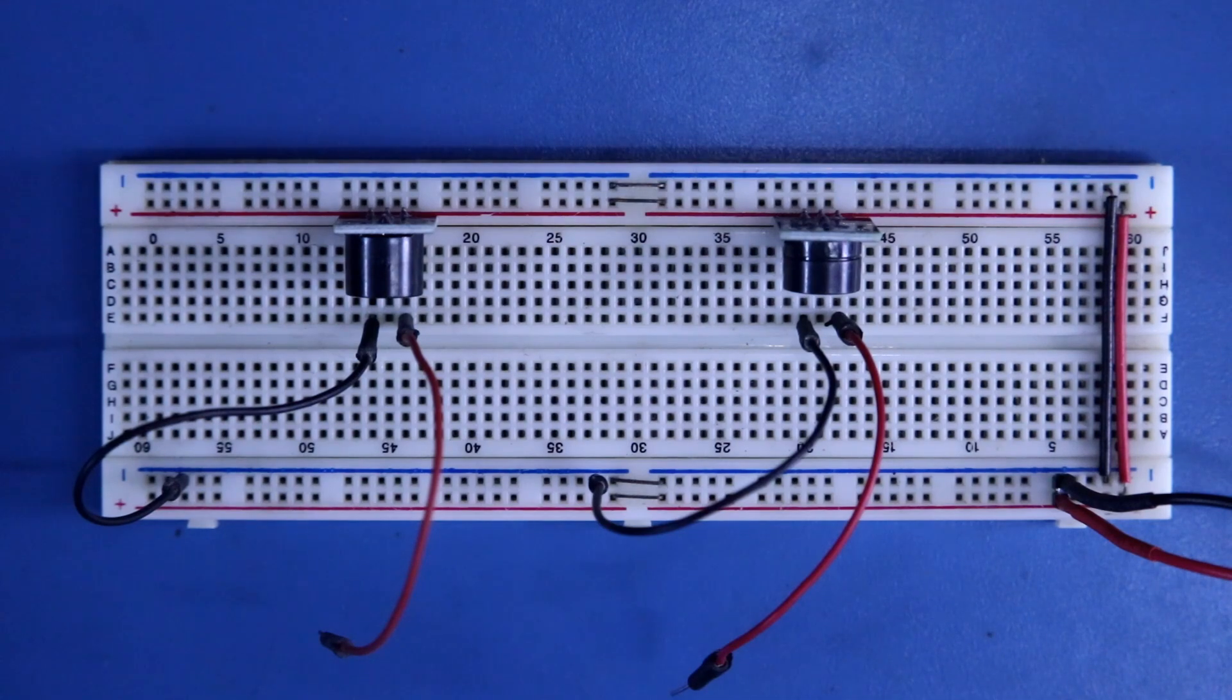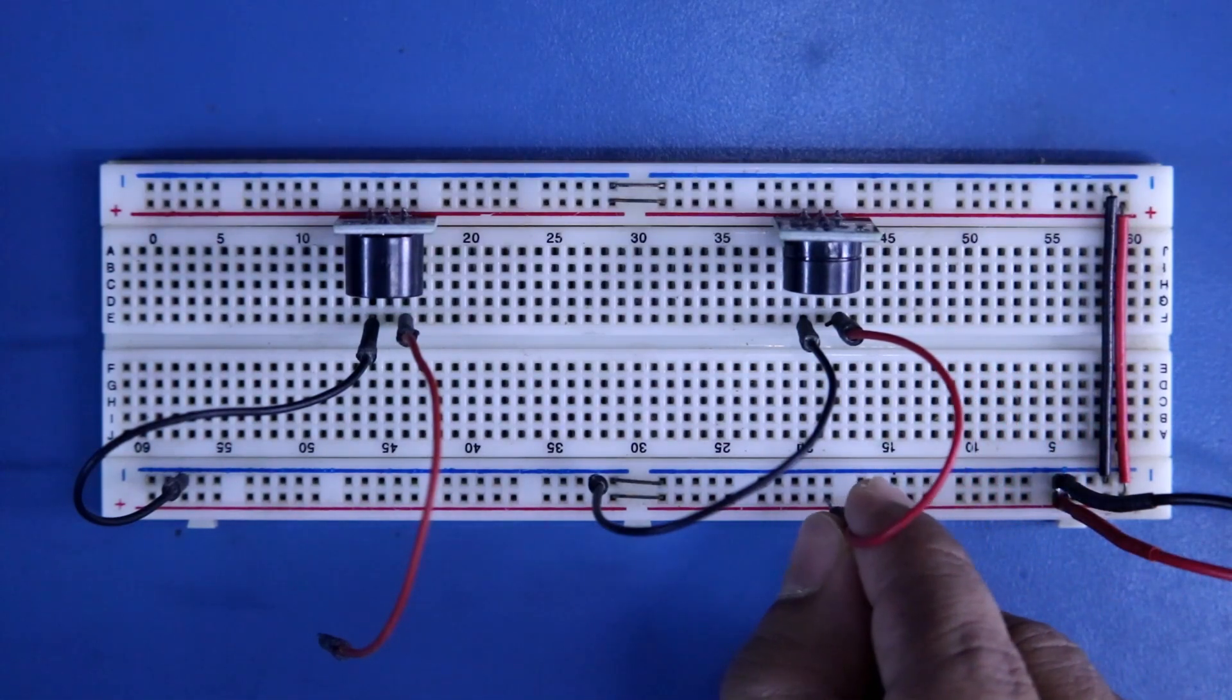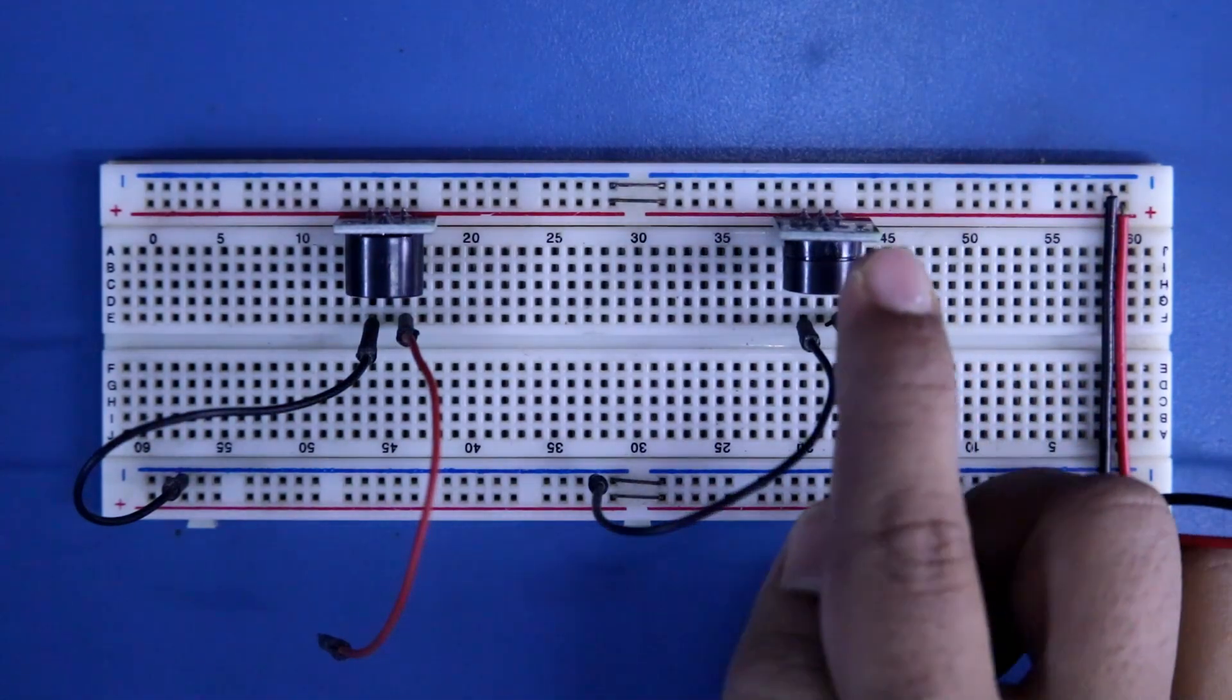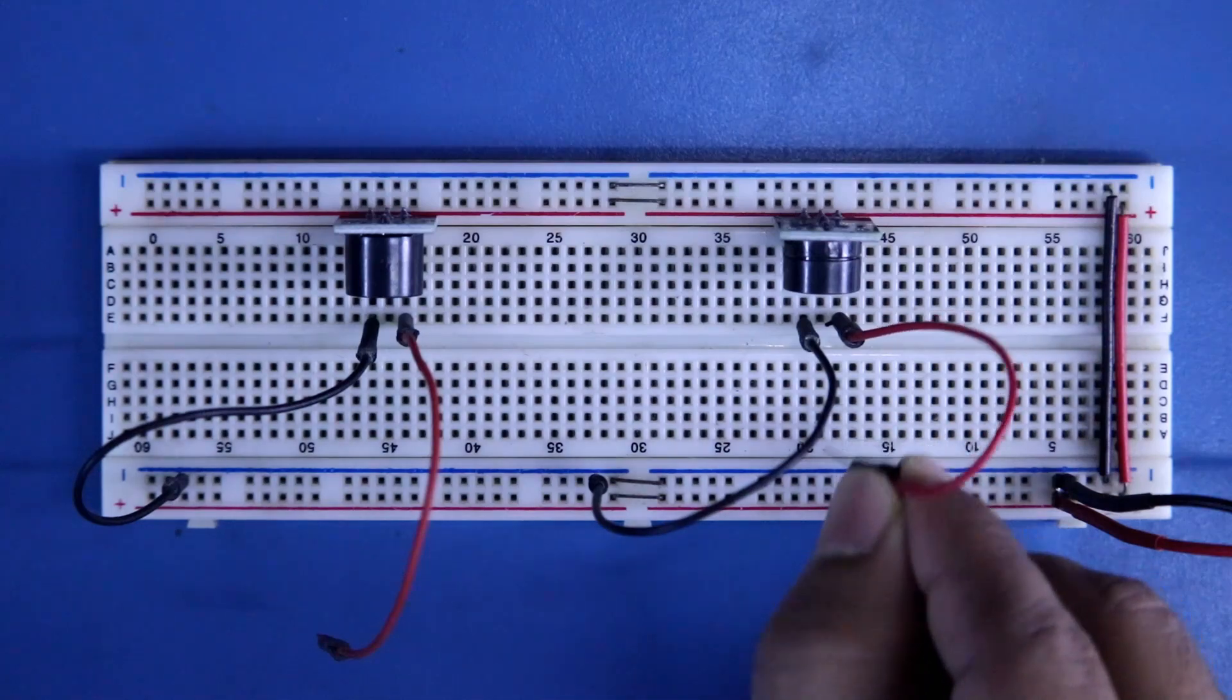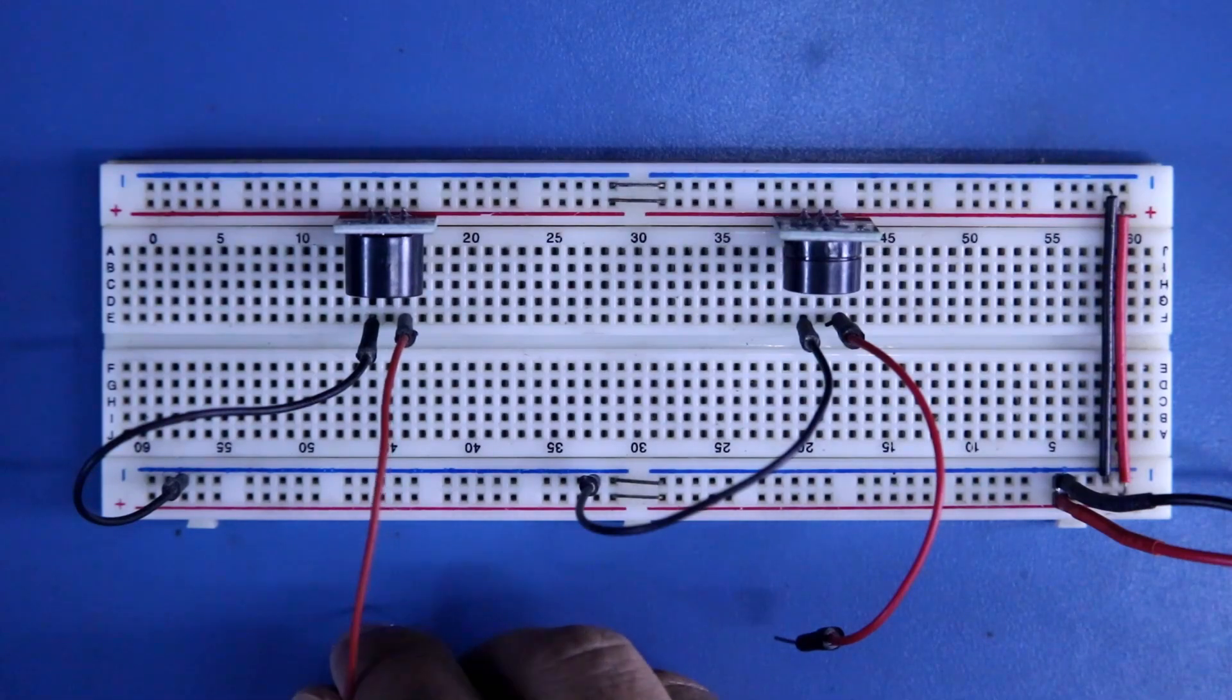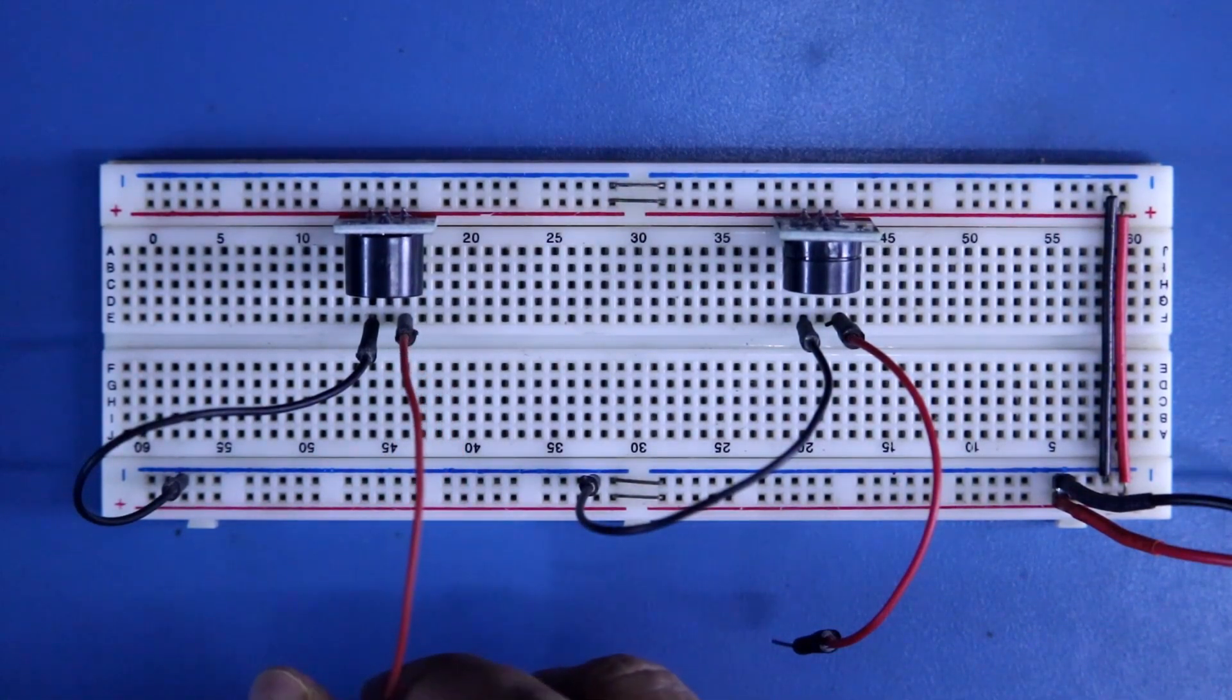It is generating sound so it is active buzzer. See, for this it is not working. It needs sound frequency. We cannot directly activate this buzzer with 5V power supply. So it is passive buzzer and it is active buzzer because we are getting a sound directly from 5V power supply.